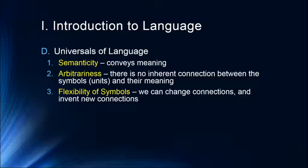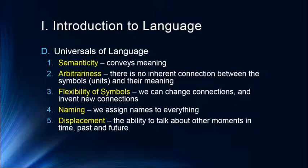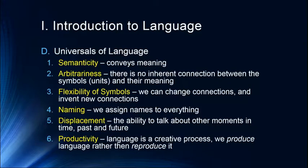Flexibility of symbols means we can change connections and invent new connections — new things come up all the time. We combine words in what we call portmanteau, shortening words and combining them with other words to come up with things like 'email.' Naming is another universal of language; we assign names to everything — that's how language functions. Displacement is another universal: the ability to talk about other moments in time, both past and future. And finally, productivity — language is a creative process. Every time you go to speak a sentence, you have to create it.